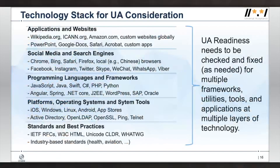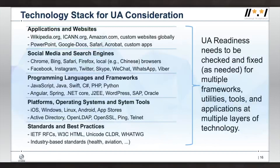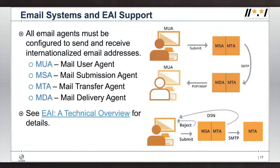The problem can lie at any layer: sometimes standards don't support such email addresses, sometimes there are gaps at the operating system layer, sometimes programming languages don't support them, and sometimes applications are simply developed without keeping these things in mind. On the mail side, all agents in the email path — mail user agents, submission agents, transfer agents, and delivery agents — must support Email Address Internationalization. If any single agent in the path does not support internationalized email addresses, the email will be rejected and bounced back.